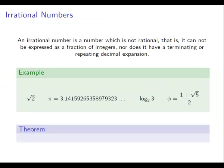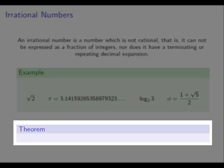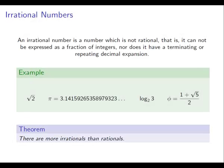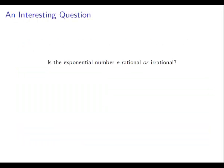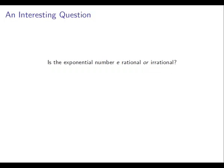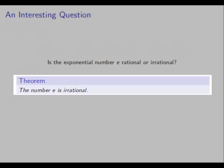There's a very interesting theorem about irrational and rational numbers, and that's simply this: there are more irrationals than rationals. It seems very counterintuitive at first, but usually you'll see a proof of this in the second year of your maths degree, should you be so bold as to do one. So, an interesting question we can ask — and we often ask this when we define a number — is: is the exponential number e rational or irrational? Well, of course, the title of this presentation probably gave it away, but the number e is irrational.